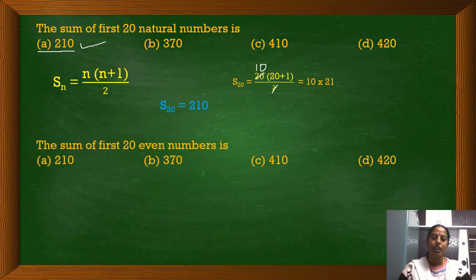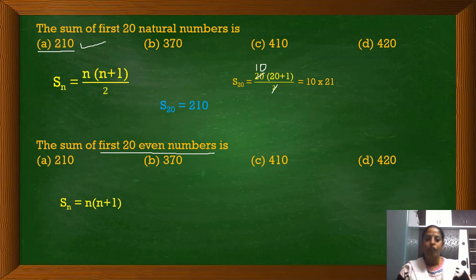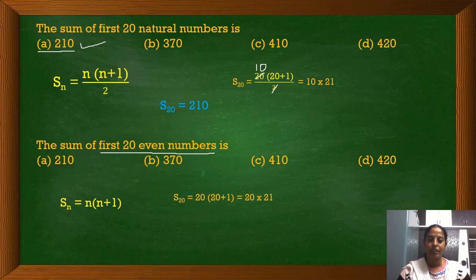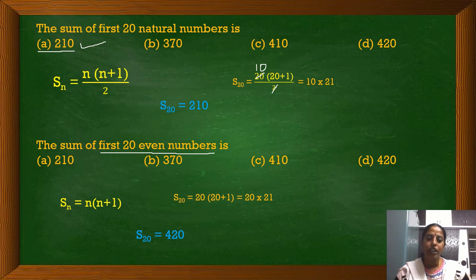Let us see one more question: The sum of the first 20 even numbers is. If you see this suddenly, you might think these two questions are the same. But here they are asking for the first 20 even numbers. We know the formula for the sum of even numbers: n(n+1). The last term is 20, so 20 × 21 = 420. Therefore, the sum of the first 20 even natural numbers is 420.